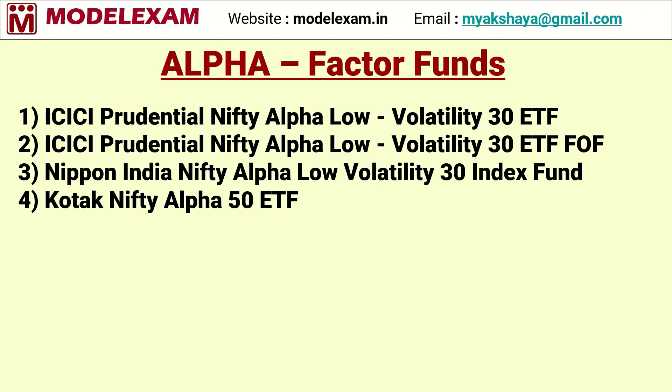See here — alpha-based factor funds. These are the funds available in the market as of now. The first three funds — ICICI Prudential Nifty Alpha Low Volatility 30 ETF and Nippon India Nifty Alpha Low Volatility 30 Index Fund — invest in 30 stocks based on alpha and low volatility, picking high alpha and low standard deviation stocks. The fourth one, Kotak Nifty Alpha 50 ETF, invests in 50 high-alpha stocks picked from a universe of the top 300 stocks based on market capitalization.